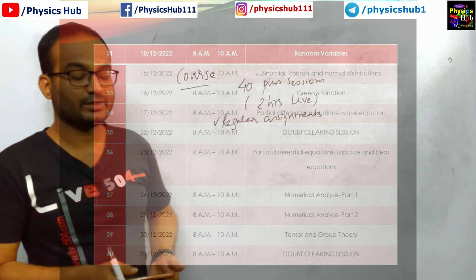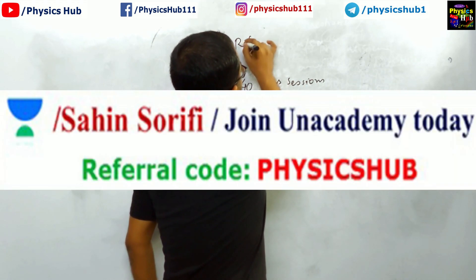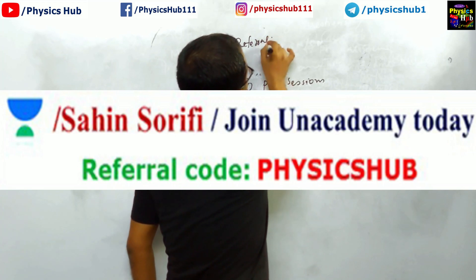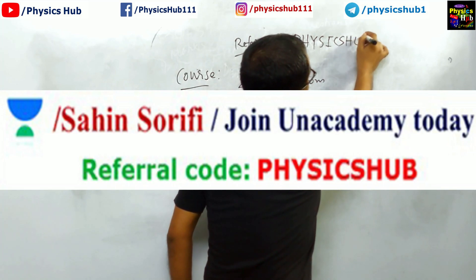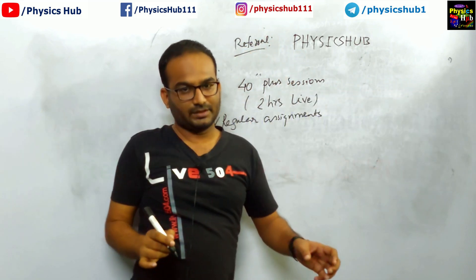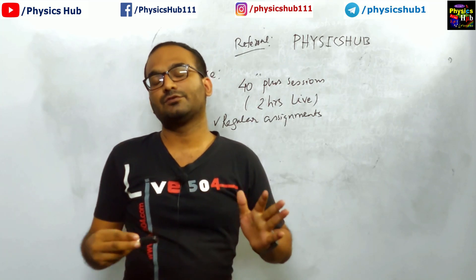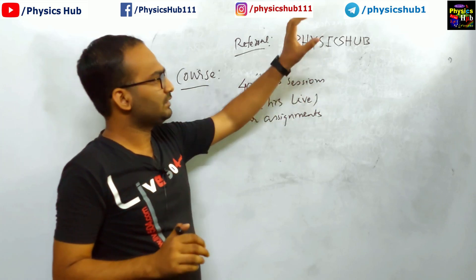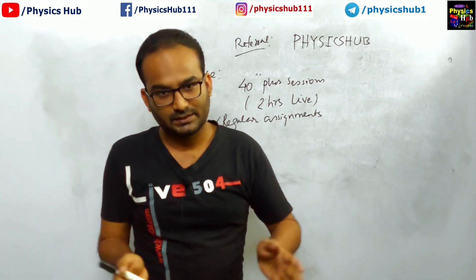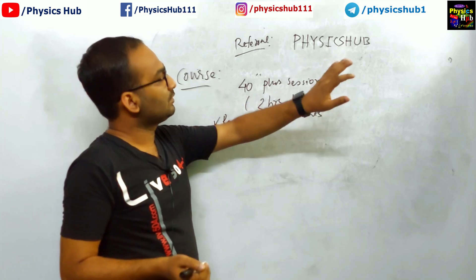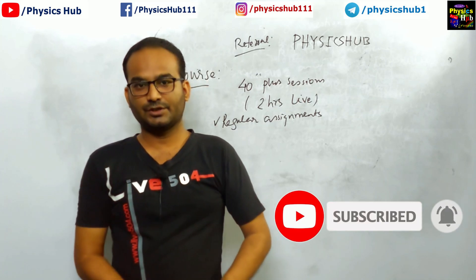To attend this course you need to take an Unacademy Plus subscription. You can use our referral code, which is the name of our YouTube channel: PHYSICSHUB — spelled P-H-Y-S-I-C-S-H-U-B with no spacing. In the future we will also be launching a detailed course on nuclear and particle physics, and you will get both courses in only one subscription. You can access all detailed plus courses for CSRNet physical science by just taking one subscription using referral code PHYSICSHUB.